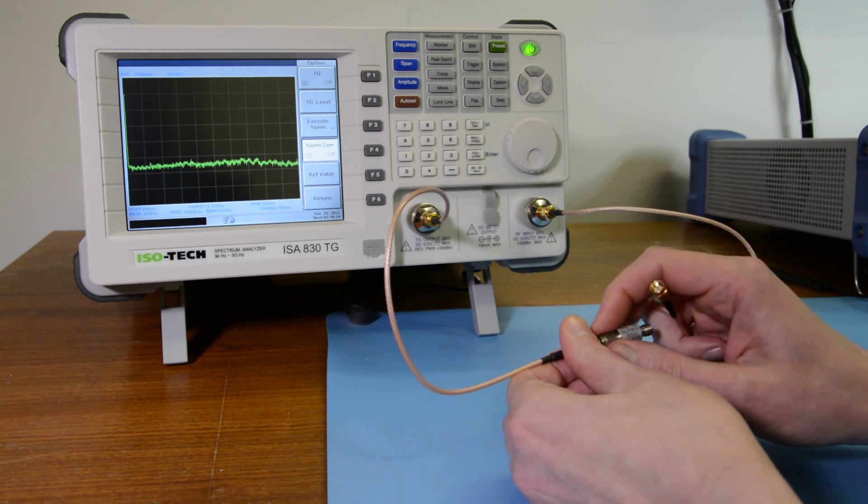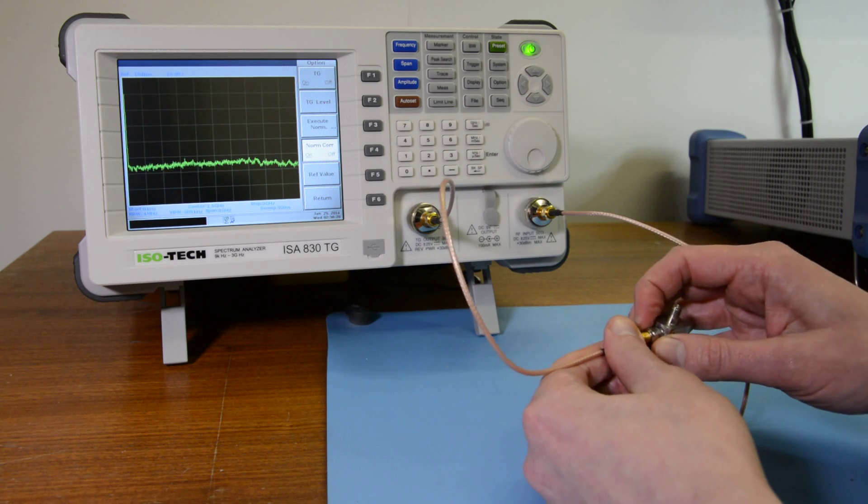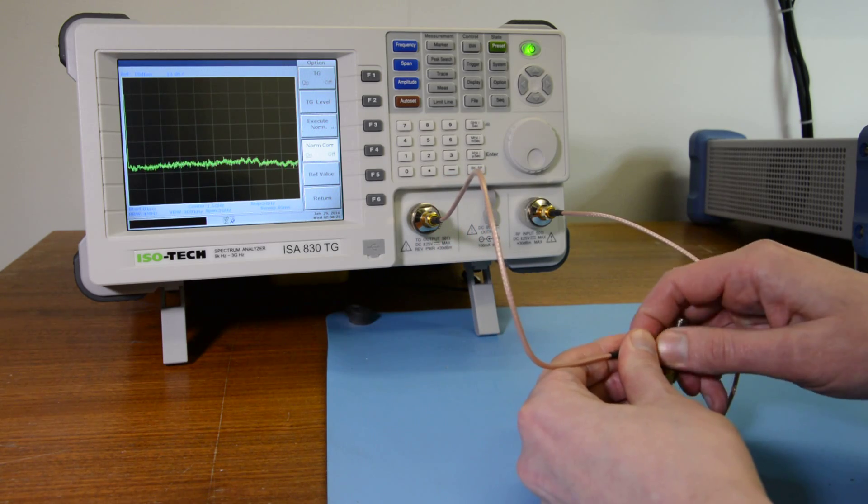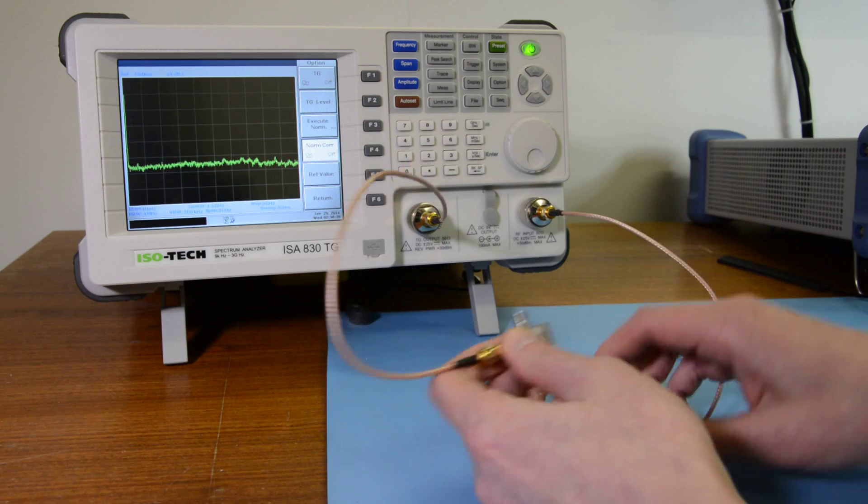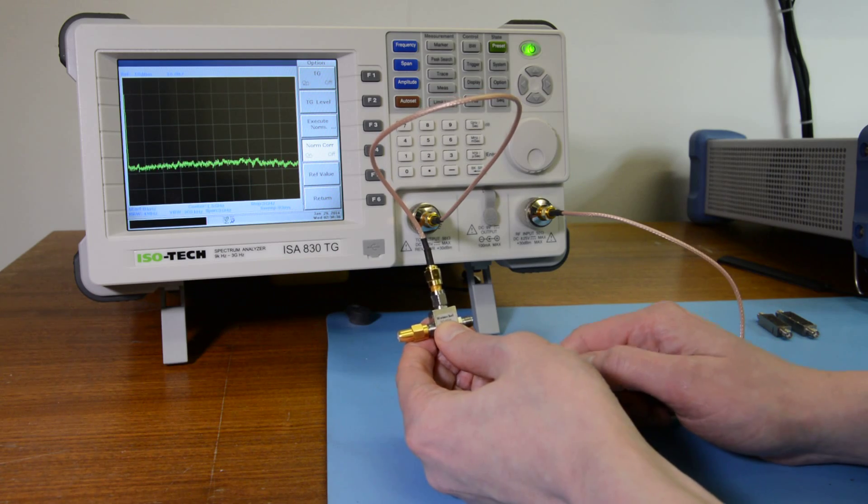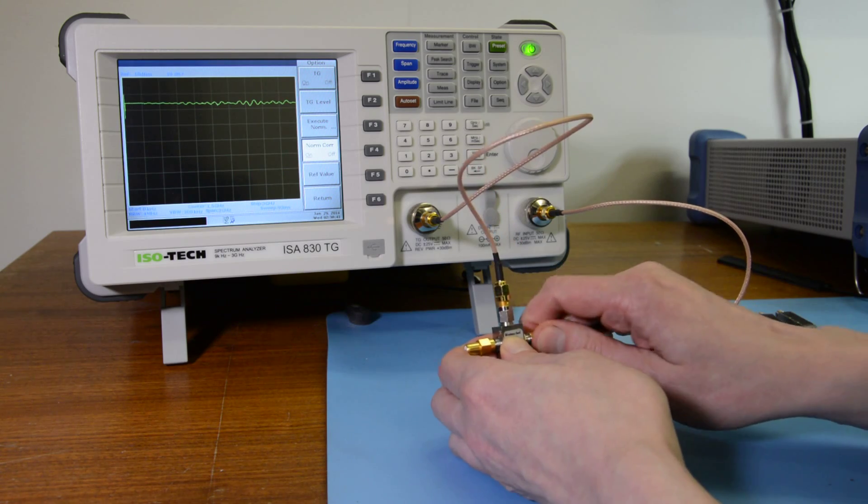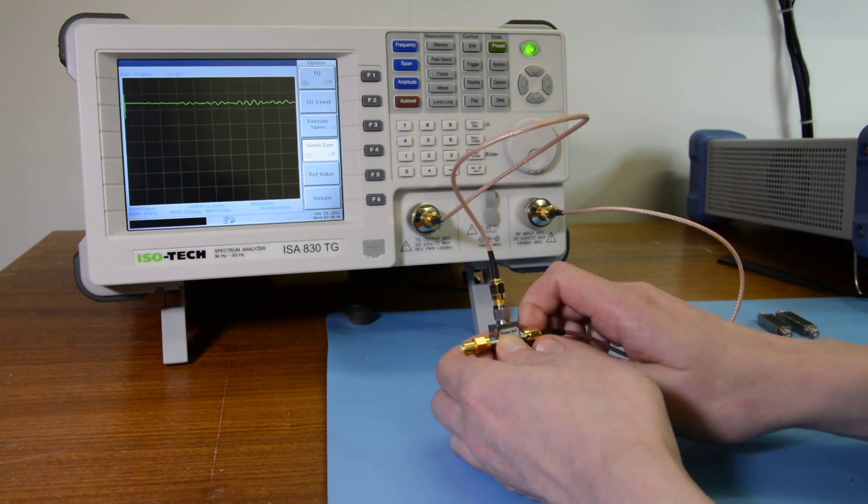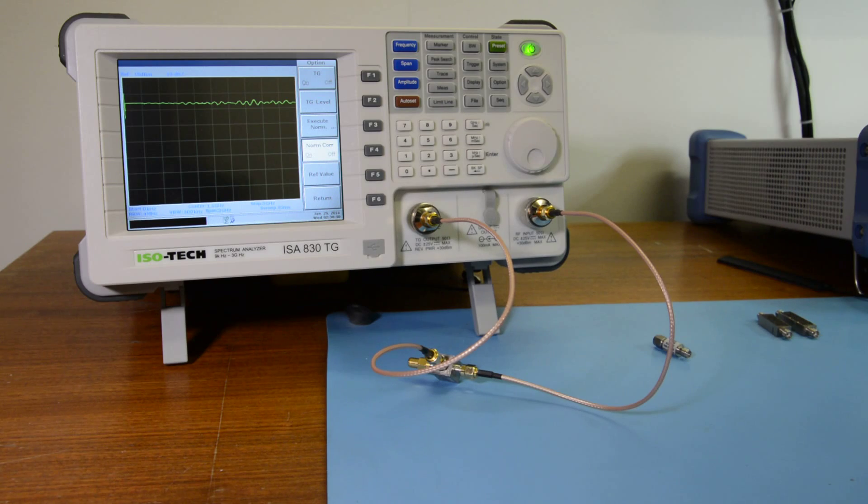We could now try a resistive power divider. So the insertion loss for this particular device should be 6 dB on each of the two output ports. We've made sure to terminate the port that's not in use with a 50 ohm load. And then with the resistive divider in place, we can see that we're just less than one division down. So yeah, 6 dB.